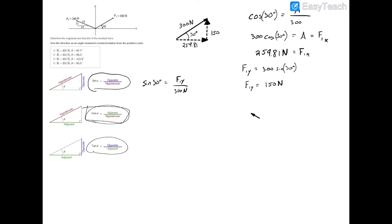Now let's repeat this process for force 2. We have a 260 newton force with an x component and a y component. The heads of the components always point towards the hypotenuse's arrow, so they point to the left and upwards. This time we don't have an angle, but we do have the ratio of each side's proportion. Looking at the force diagram, we call this our angle of attack: the opposite side, the adjacent side, and the hypotenuse — calling the angle theta.